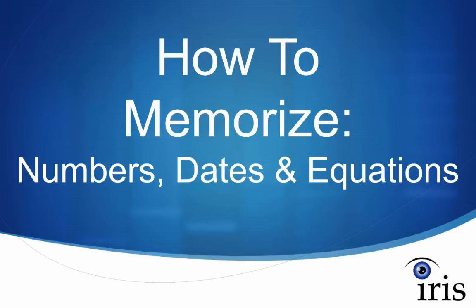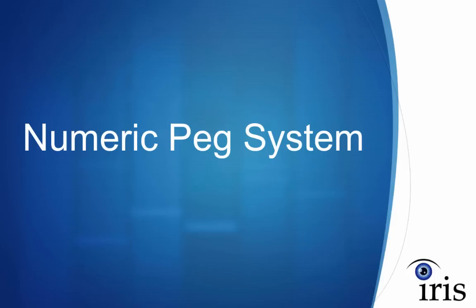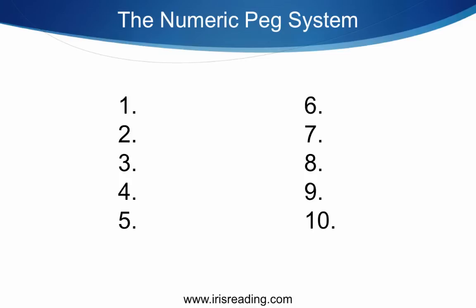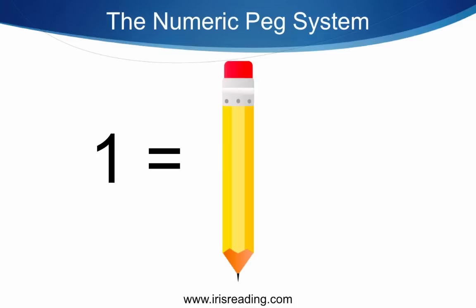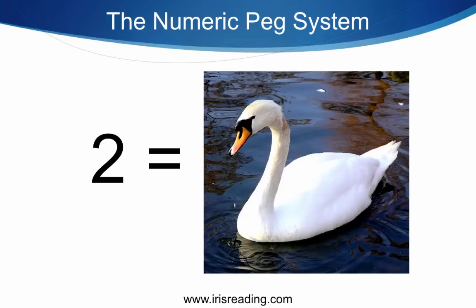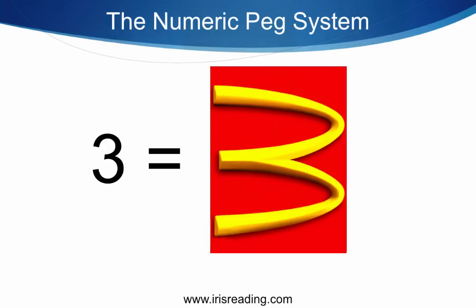So how do we go about memorizing numbers, dates, and equations? You need to use a technique called the numeric peg system. This turns numbers into visuals. So the one becomes a pencil, the two becomes a swan, the three becomes a McDonald's. Now if you're wondering why these numbers are turning into these visuals, it's because they have a similar shape to them.